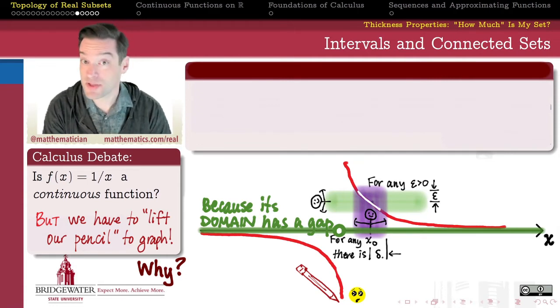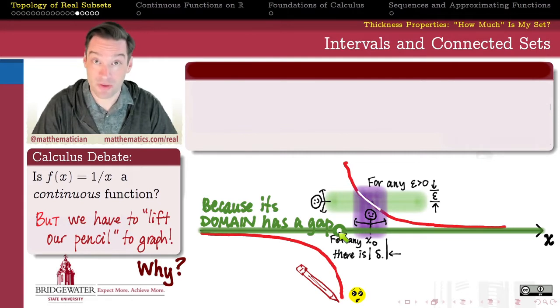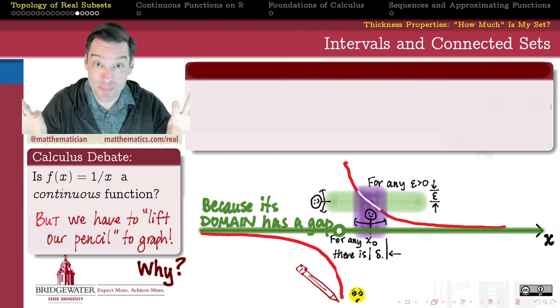The domain of the reciprocal function is the set of all non-zero real numbers. But that set has a gap in it, right? We've removed zero from the real number line. And in doing so, we have sort of sliced the real line into two separate pieces. And the reason that the function's graph is disconnected is because the function is only going to have a piece of the graph over a portion of its domain.